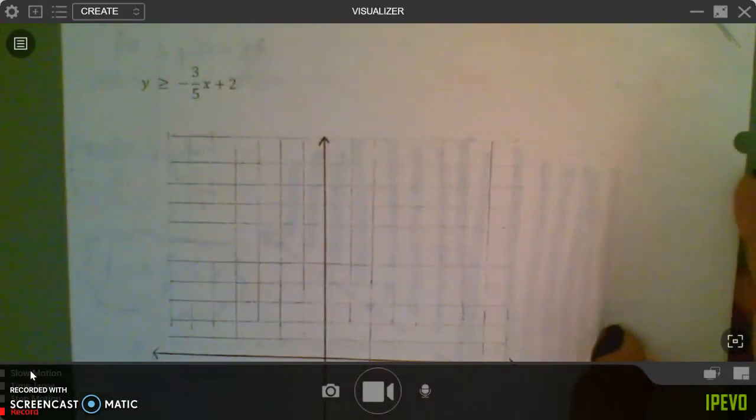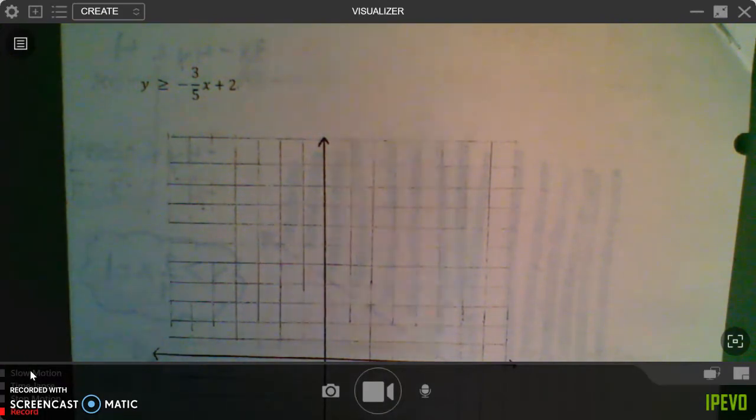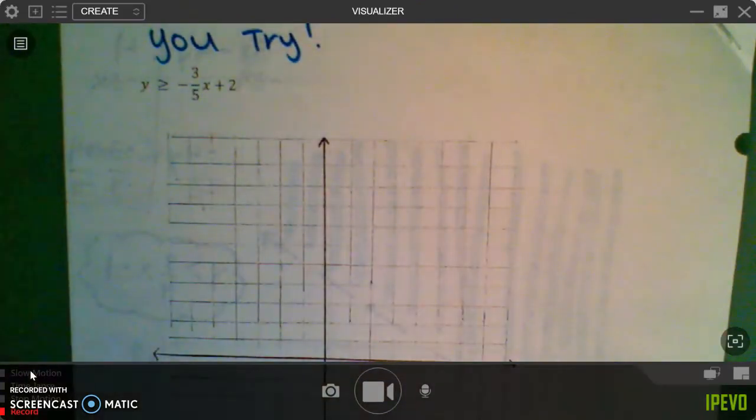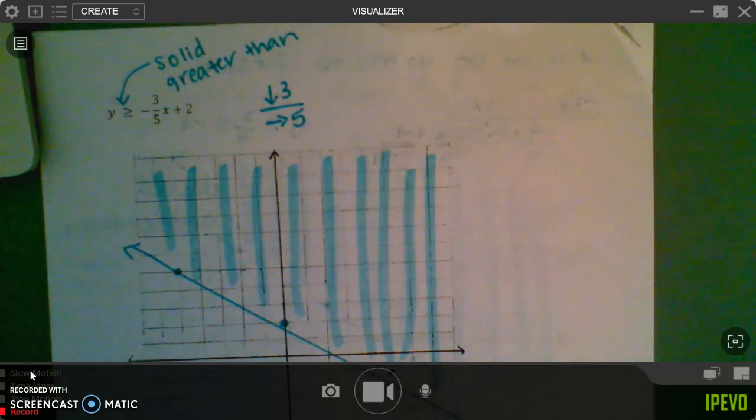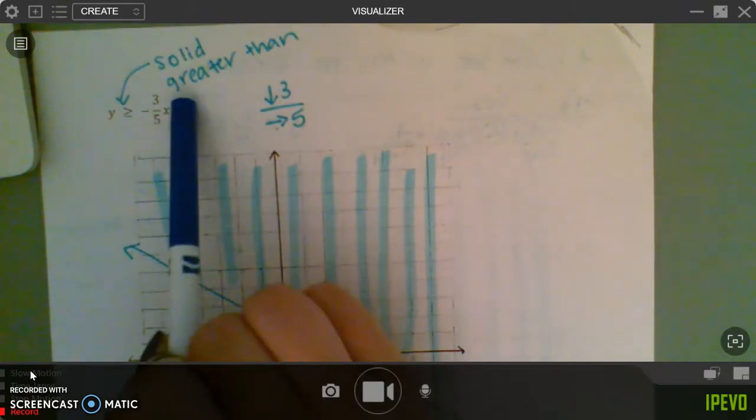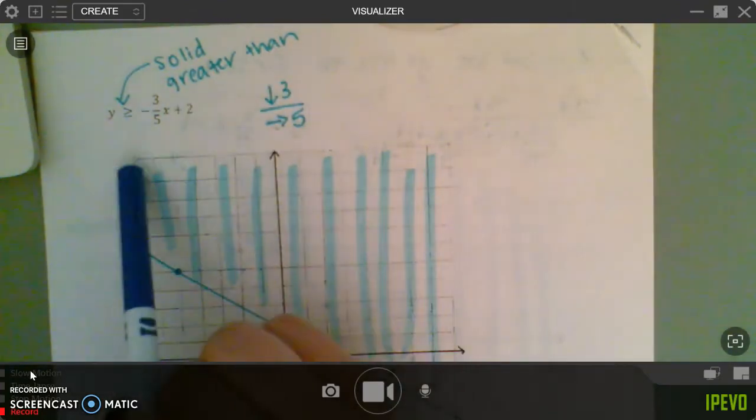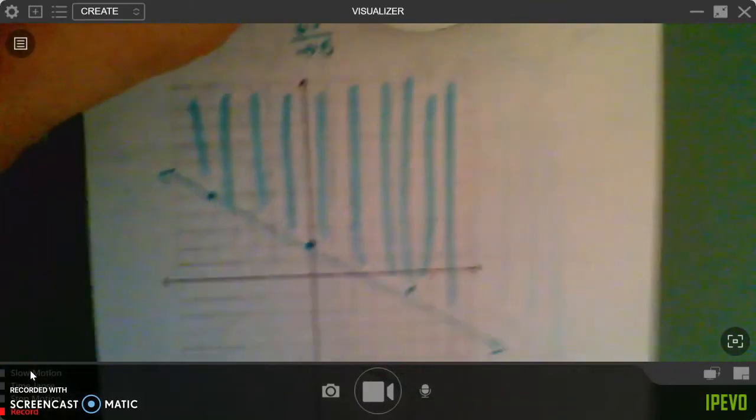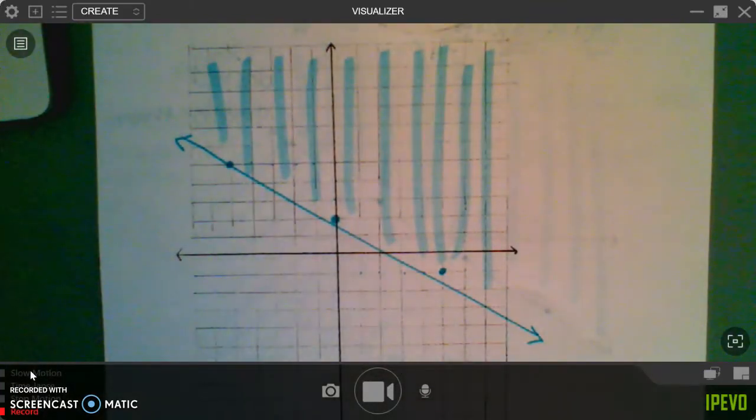I want you guys to try this graphing problem completely on your own. This is a completely you try problem. Go ahead and pause the video, and don't unpause it until you're completely done graphing. So when you graph this, you should have figured out that it's going to be a solid line, and that's greater than, so greater than is above. And this is what your final graph should look like.